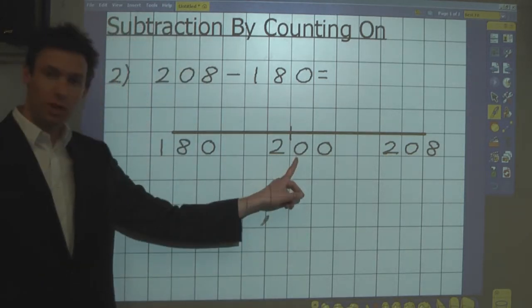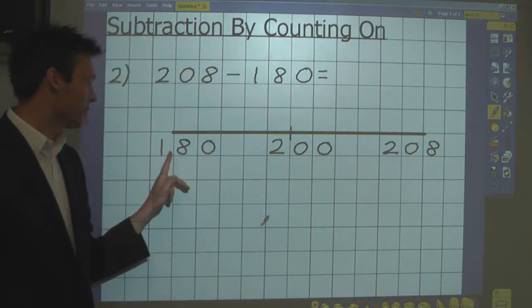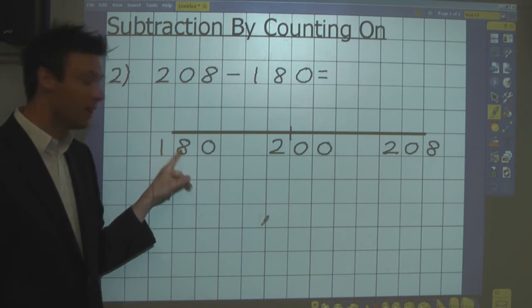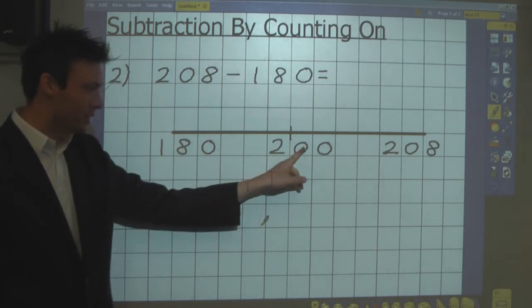And the reason I've chosen 200 is because it's the next multiple of 100 after 180. It's very easy for me to add on from here to get to that number.